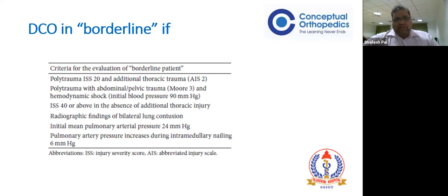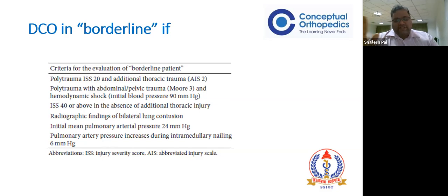The criteria for evaluating a borderline patient include: polytrauma with ISS score of 20 or more with AIS of 2; associated abdominal or pelvic trauma with hemodynamic shock; ISS of 40 or more; bilateral lung contusion on initial chest radiograph. There is a concept called evolving lung injury - the patient may not complain of chest trauma, but because of ARDS there will be continuous contusion, and after 24 hours a CT may show significant lung contusion. These patients do poorly. Also, if the initial mean pulmonary arterial pressure is more than 24 and raises by 6 during nailing, it is a bad sign. All these criteria indicate a borderline patient.